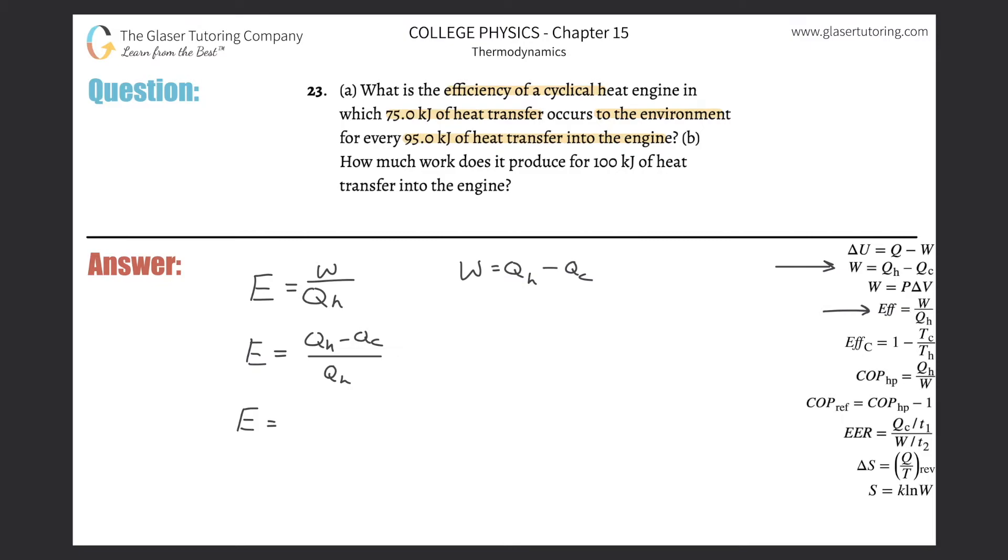All we have to do now is plug in the values. So the hot reservoir was 95, and you can leave this in kilojoules, because it's just simply a ratio. But you got to make sure your units are consistent. Then minus the 75, because that's to the environment, and then divide it by the 95, and voila.